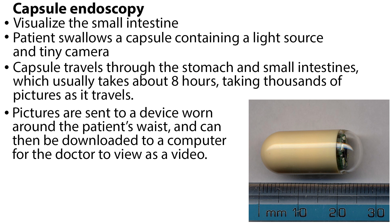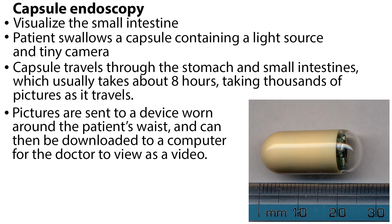A lot of the digestive tract can be seen using upper endoscopy or colonoscopy, but it is harder to see the small intestine. Capsule endoscopy is one way to visualize the small intestine, in which the patient swallows a capsule containing a light source and a tiny camera. The capsule travels through the stomach and small intestines — usually about 8 hours — taking thousands of pictures as it travels. The pictures are sent to a device worn around the patient's waist and can then be downloaded to a computer for the doctor to view as a video. The capsule passes out of the body during a normal bowel movement. However, it is not useful for looking closely at the colon, and it is expensive.